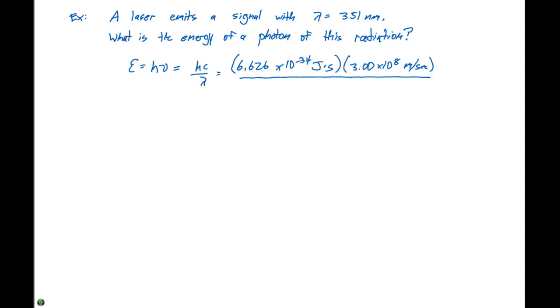Note that we have meters in the numerator, so we need meters in the denominator. Typically, if we write 351 nanometers, we know that a nanometer is 1 times 10 to the minus 9 meters. So we can just say 351 times 10 to the minus ninth meters.